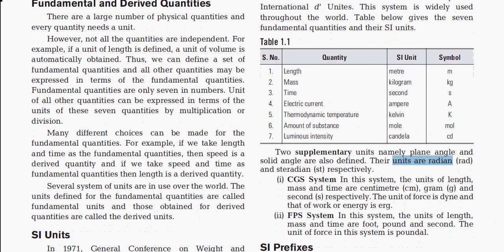All quantities are not independent — if a unit of length is defined, a unit of volume is automatically obtained. We can define a set of fundamental quantities, and all other quantities may be expressed in terms of them. There are only 7 fundamental quantities, and units of all other quantities can be expressed by multiplication or division of these 7.